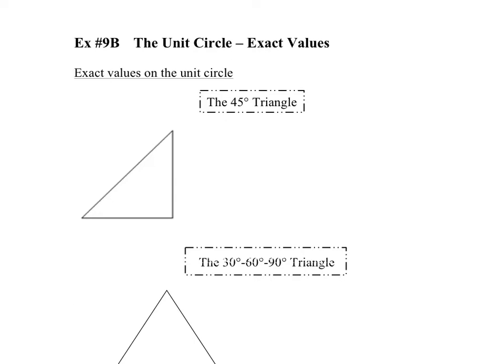First we're going to look at the 45-degree triangle. This is a 45-degree triangle because its angles are 45 degrees right here. As you can probably tell, that's a right angle triangle. And if this is an angle of 45 degrees, you know that this is also an angle of 45 degrees. Since we're in the unit circle, we're going to imagine that we can put this triangle in the unit circle, which means that this is going to have a radius of 1. So you can imagine the circle around here — this is a quarter of the unit circle, and this would be the triangle inside of that circle.